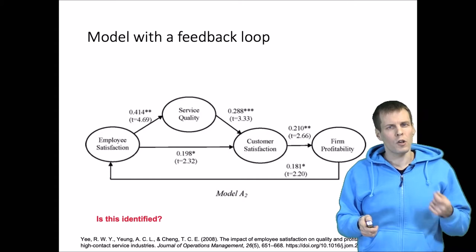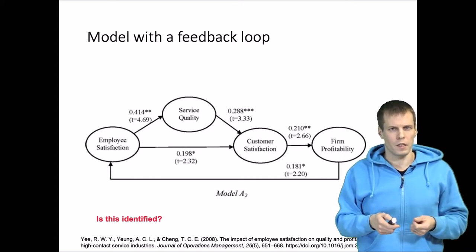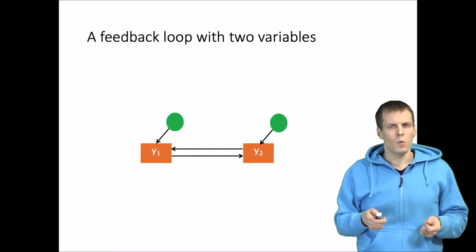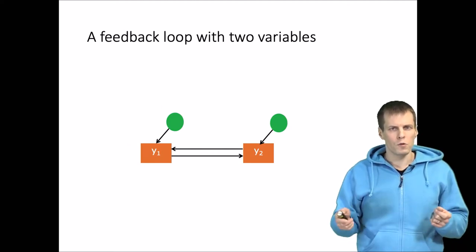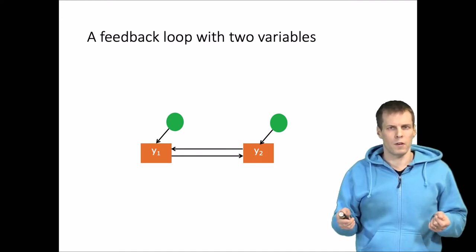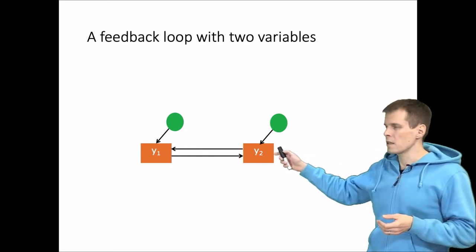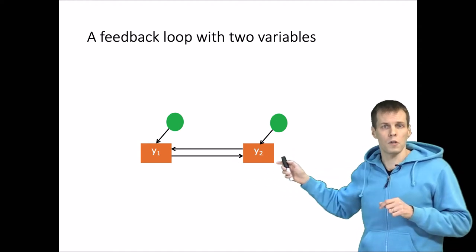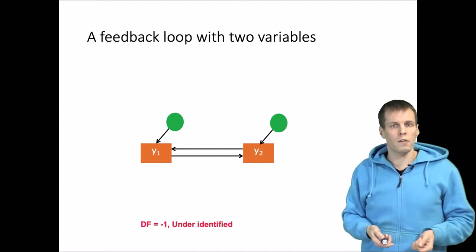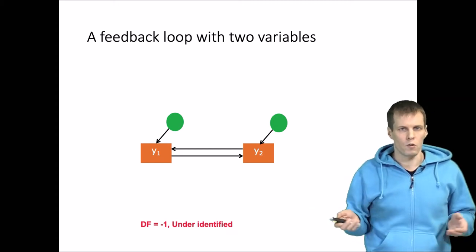Let's start talking about feedback loops that make it difficult to assess identification. In the simplest case we have a feedback loop between two variables: y1 influencing y2 and y2 influencing y1. We can apply the T rule — we have one covariance and we are estimating two parameters relating these variables to one another. The degrees of freedom is minus one, so this is under-identified and we don't need to consider it any further.